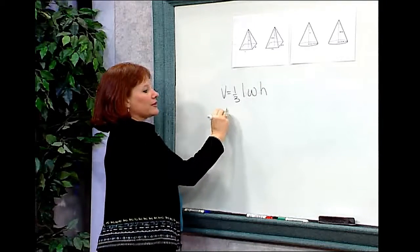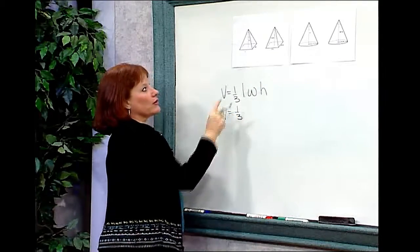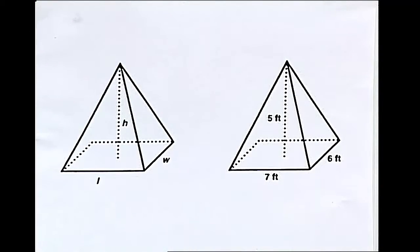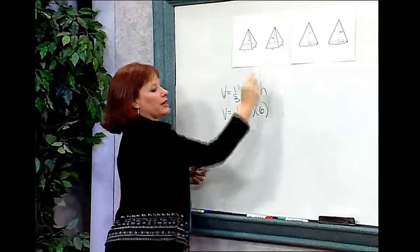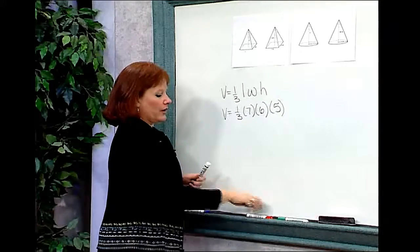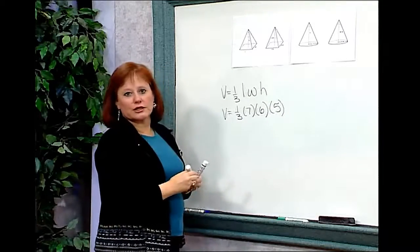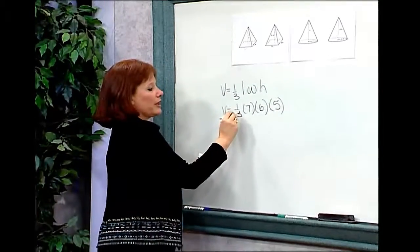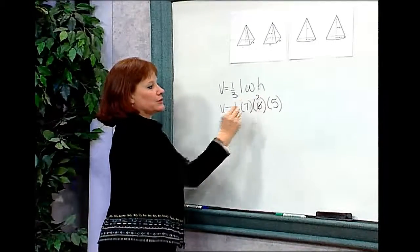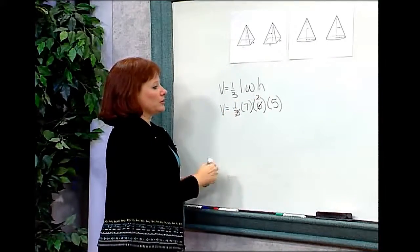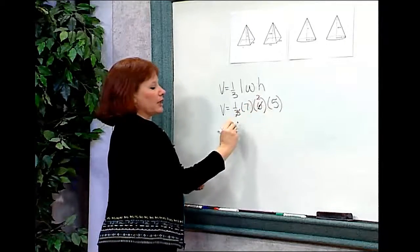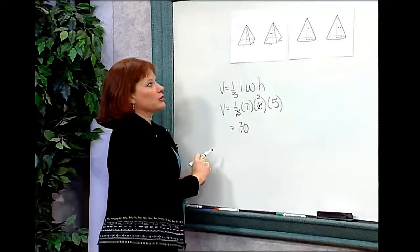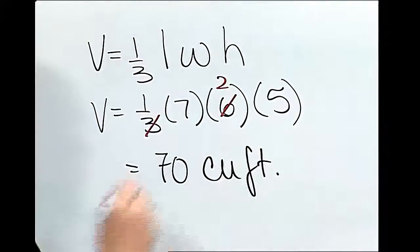So when figuring this out, the volume equals one-third of the length, which is 7 feet, times the width, which is 6 feet, times the height, which is 5 feet. I can use what I know about multiplying with fractions to simplify: 3 goes into 6 two times. So I multiply 7 times 2, which is 14, times 5, which is 70. So my pyramid has 70 cubic feet of volume.